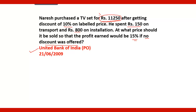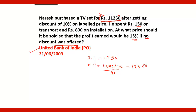This Rs. 11,250 is the selling price for the seller, since he got a 10% discount on it. So what will be the labeled price? Writing directly: selling price 11,250 × 100 / (100 − 10), that is divided by 90. If you solve this, you get Rs. 12,500.